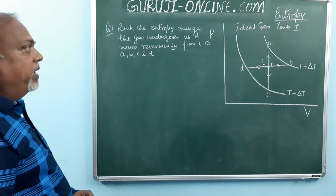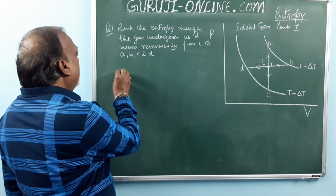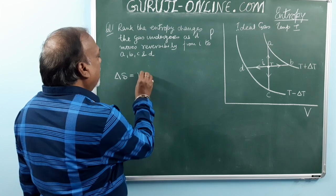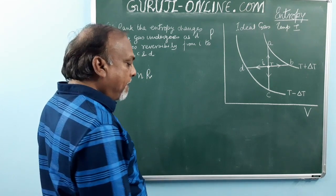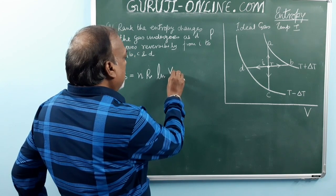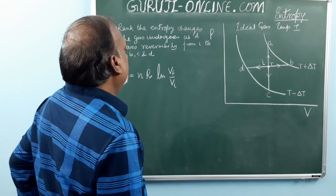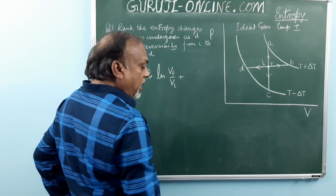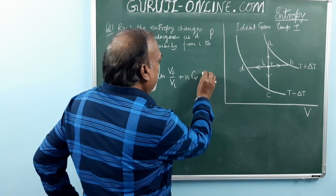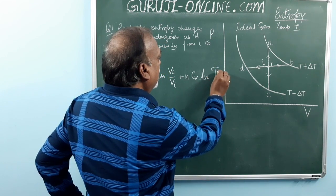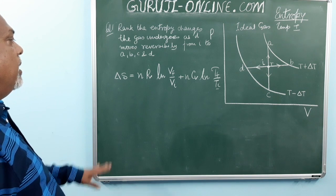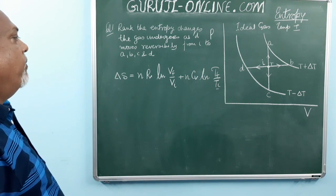For solving this, delta S — the change in entropy — is given by: N R ln(Vf/Vi) plus N Cv ln(Tf/Ti). This is the formula for change in entropy for a reversible process.